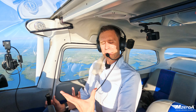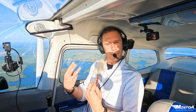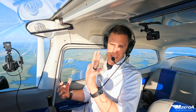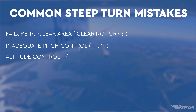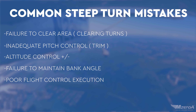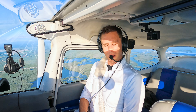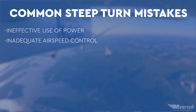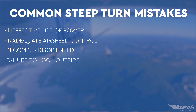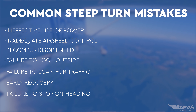On top of that, the FAA also gives us 13 — believe it or not — 13 common student pilot errors that people make. Tell me if you've ever made any of these on a steep turn: not clearing the area; inadequate pitch control on entry or rollout — there is your trim technique; gaining or losing altitude; failure to maintain a constant bank angle; poor flight control; ineffective use of trim — number six is the ineffective use of trim, right from the Airplane Flying Handbook; ineffective use of power; inadequate airspeed control; becoming disoriented; performing by reference to flight instruments rather than visual references — remember, looking outside; failure to scan for other traffic; attempting to start recovery prematurely; and failure to stop the turn on the designated heading. That's why I teach you to look outside.